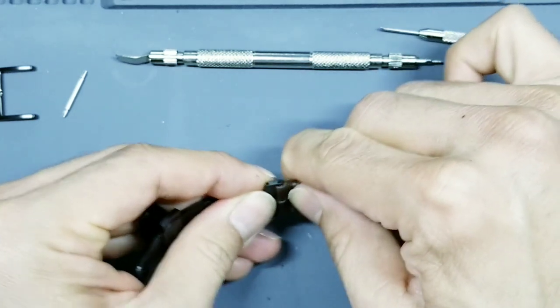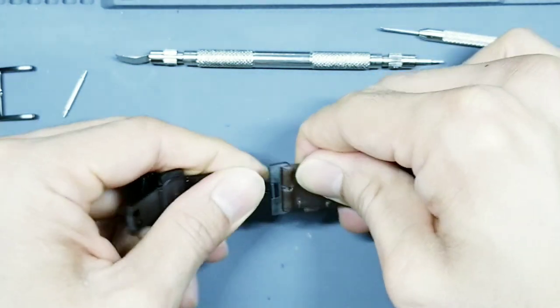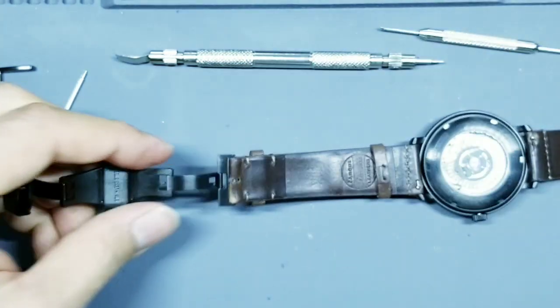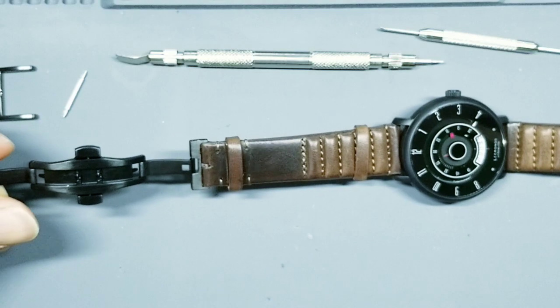Take this spring bar, insert it through just like that. And then you'll just reinsert it back into the holes of that dual deployant. And then once you think it's in, usually you can hear a click, go ahead and manipulate it, give it a little jiggle, just to make sure it's secure. Obviously the worst thing that could happen is you think it's in there and it's really not. You wear the watch and it falls off your wrist and you damage your watch. So just give it a little jiggle there.